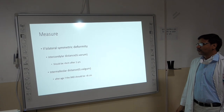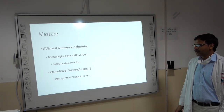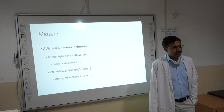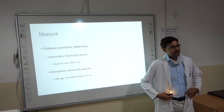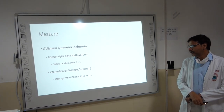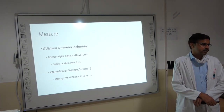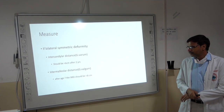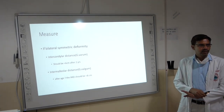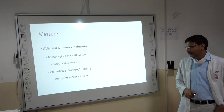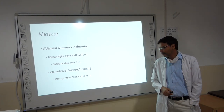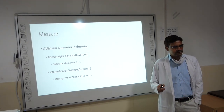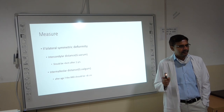Coming to measurements: if the deformity is bilateral and symmetrical, two things can be measured. First is the intercondylar distance — in cases of genu varum, this should be less than 6 cm; if beyond 6 cm, further investigation is needed. Second, for genu valgum, measure the intermalleolar distance (IMD), which should be less than 8 cm beyond 7 years of age. If more than this, further investigation is required.